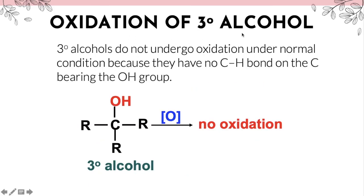Oxidation of tertiary alcohol: tertiary alcohols do not undergo oxidation under normal conditions because they have no C-H bond on the carbon bearing the OH group. For alcohol to undergo oxidation, the carbon attached to OH must have a hydrogen attached to it. Since tertiary alcohol has no hydrogen on that carbon, no oxidation occurs.